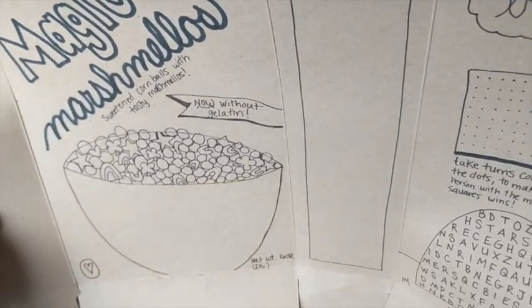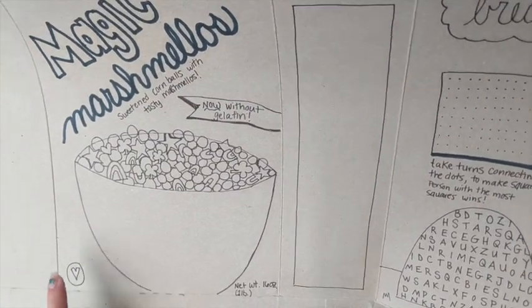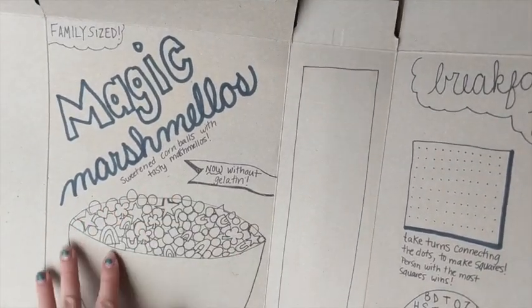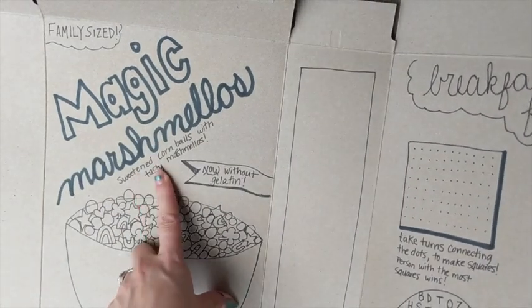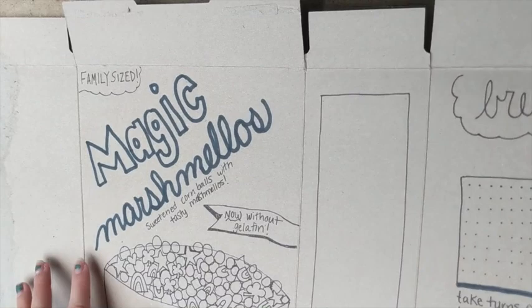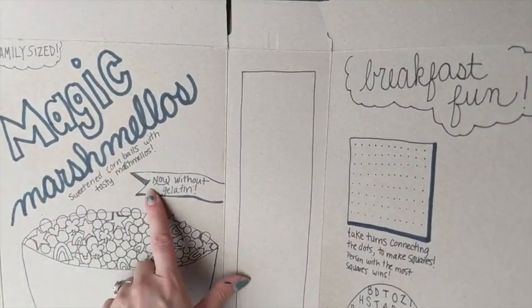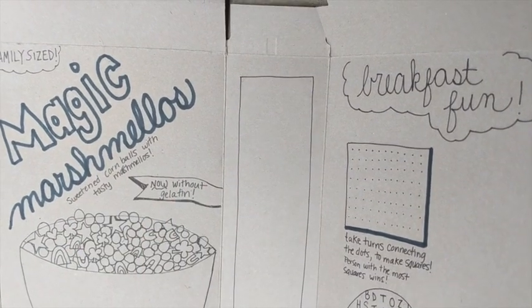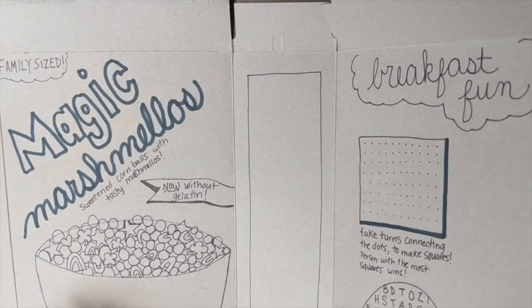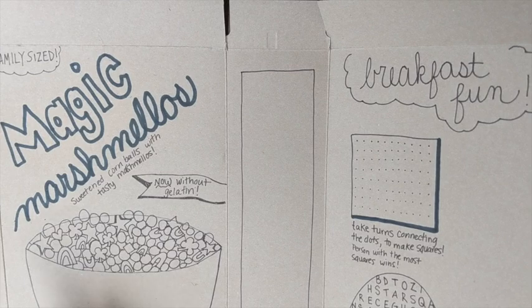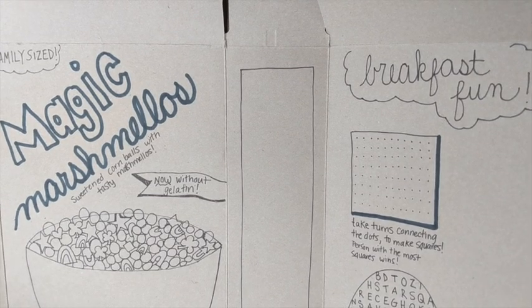This helps us know that they are vegetarian or vegan. We know how much is in the box. We can see something colorful and flashy. We know now that they are sweetened corn balls with tasty marshmallows. Family-sized — just makes me feel like I'm getting a good bargain. And this is important to know if people who are not interested in eating gelatin — we can see it right there. Maybe on my bowl, I feel like drawing a unicorn or something like that. But all of this is totally up to you. My finished version will actually be on Flipgrid.